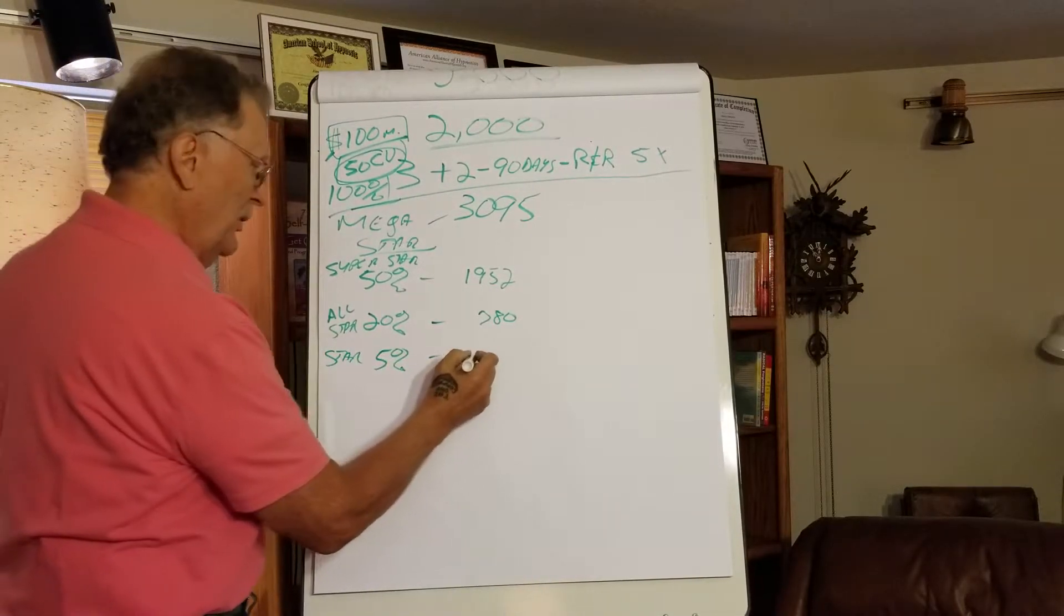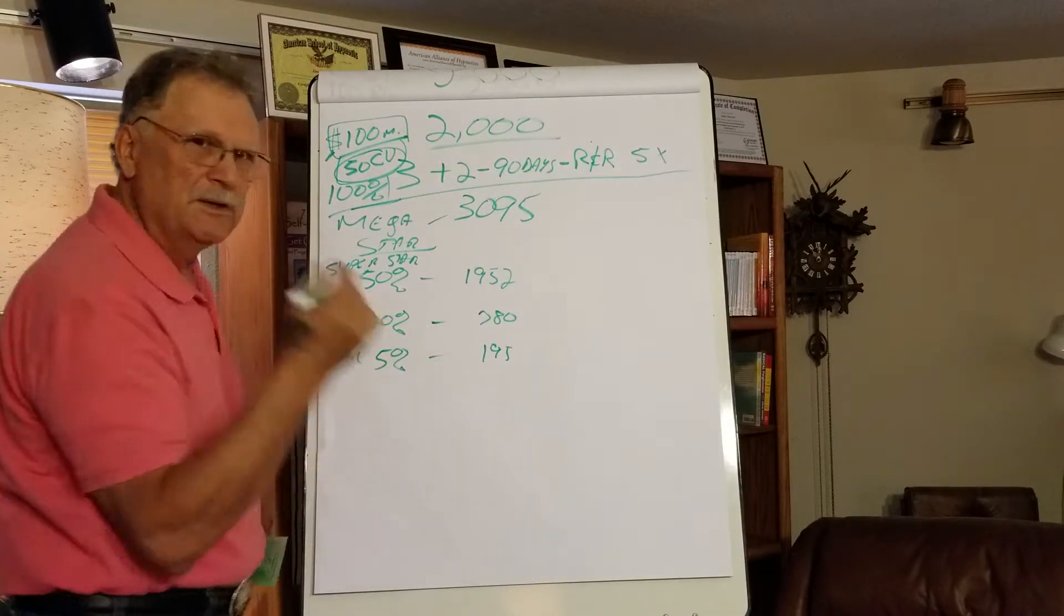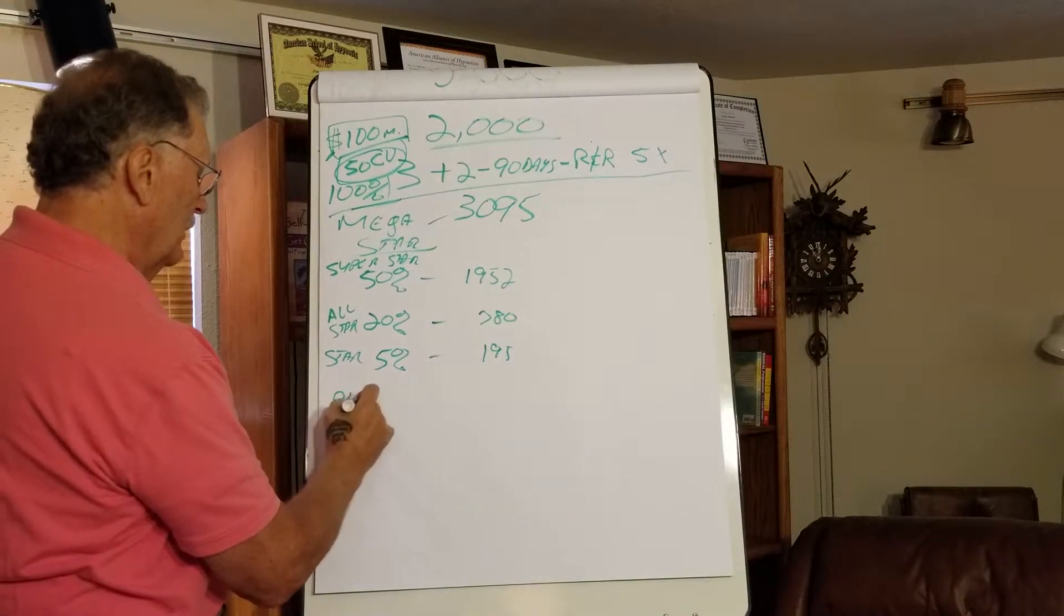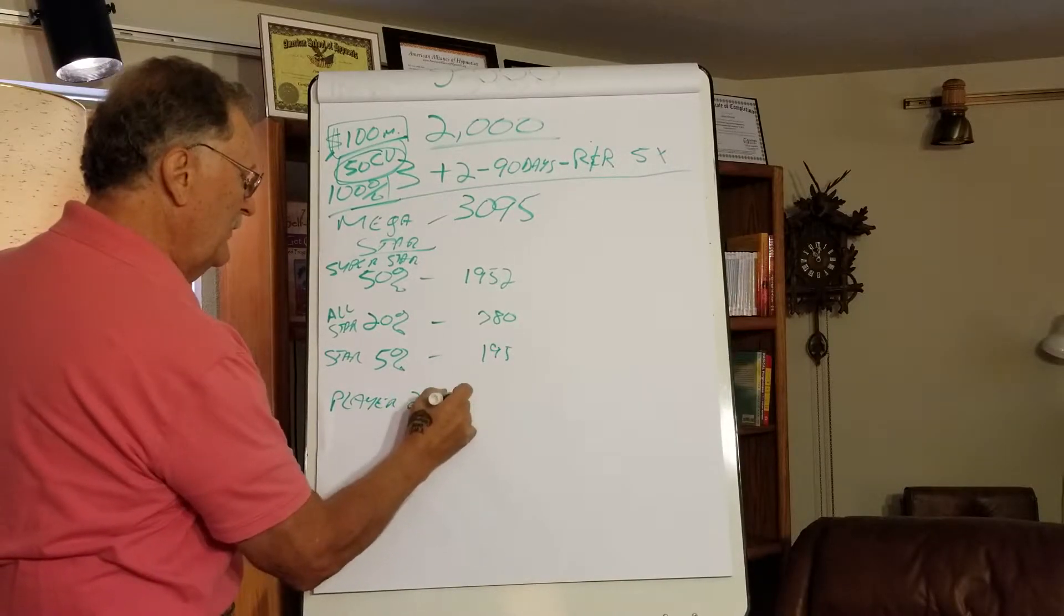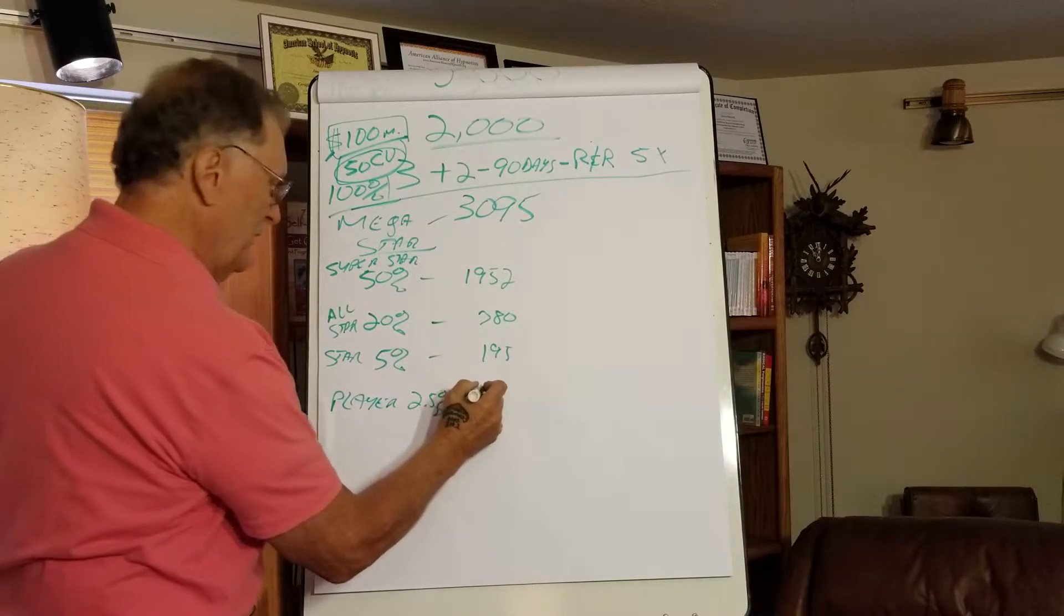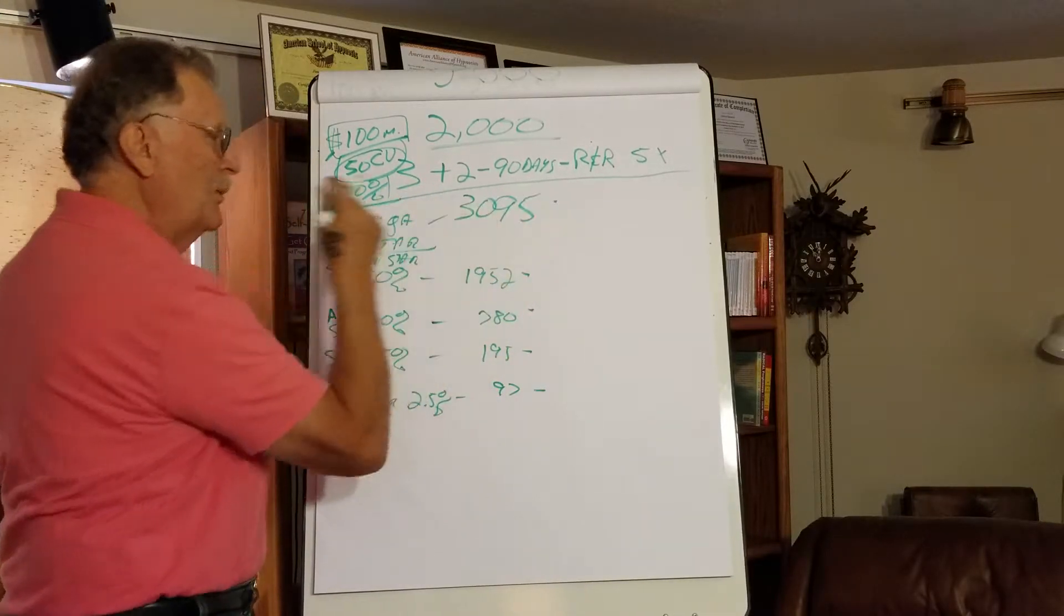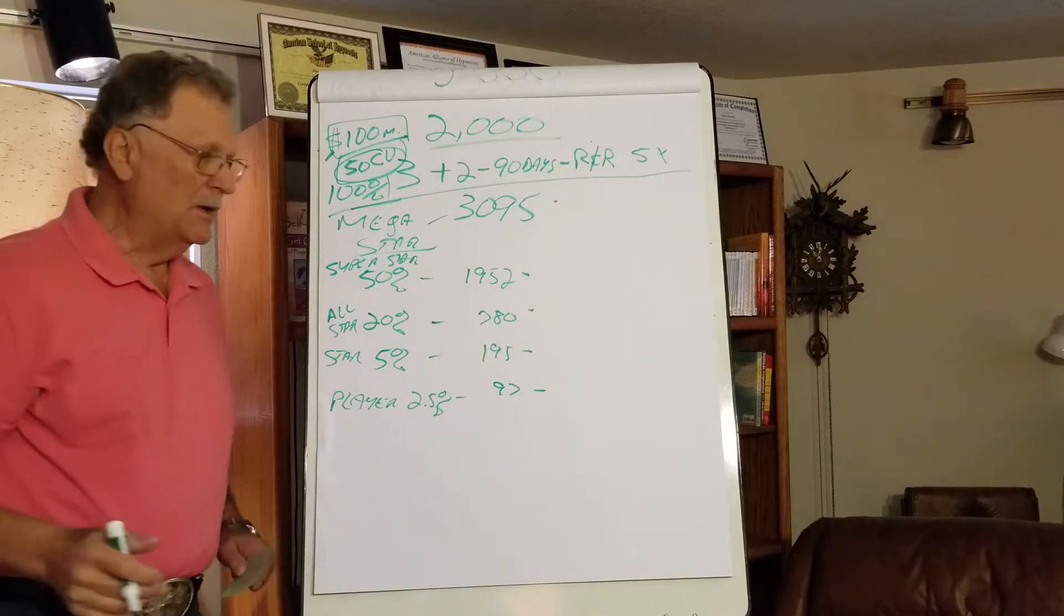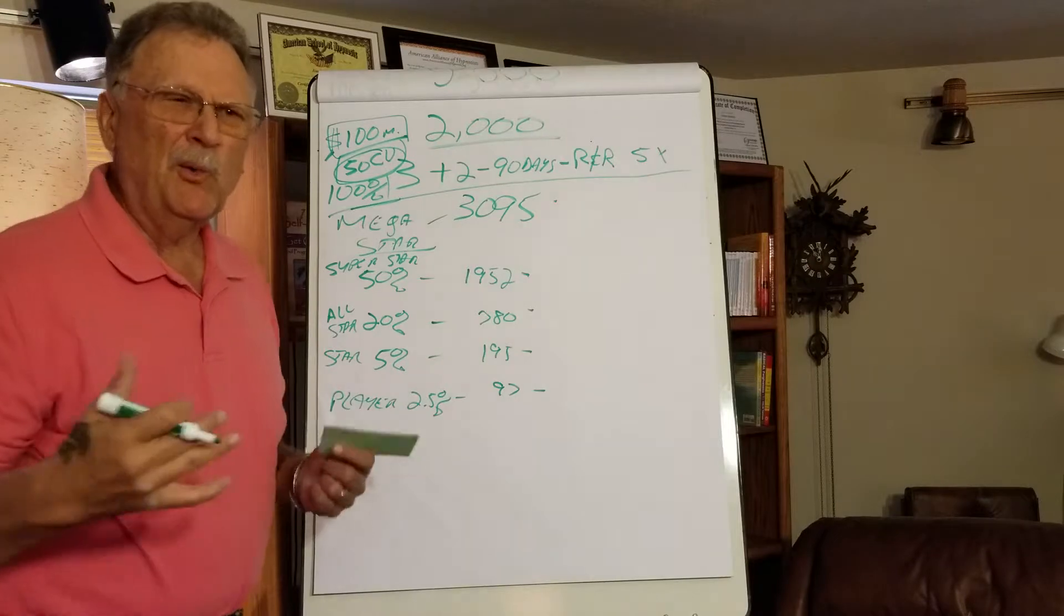All right, well what if it's not quite that good and you're 5% effective? Well, we're still going to call you a star, okay? And you're going to have a total of 195 people. And we're going to talk about what is the money that this means to you. But maybe you're just a player, all right, for now you're just a player. 2.5% effective. That means you're going to have a total of 97 people. All right, what does that mean to you?